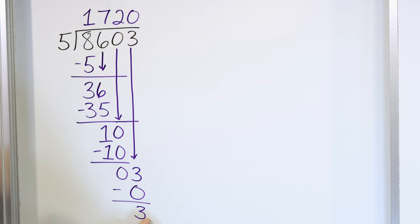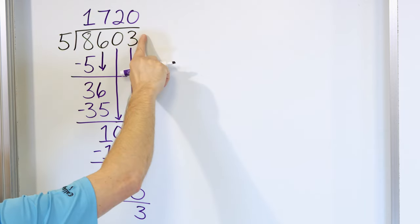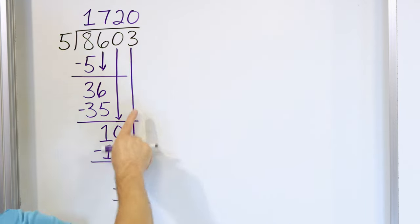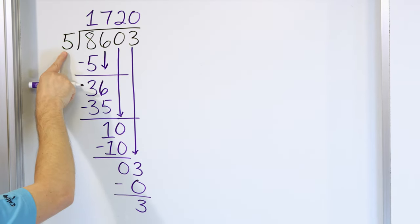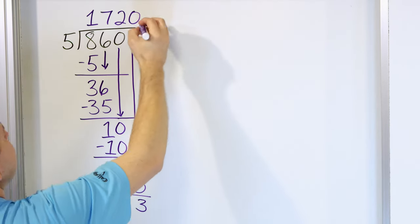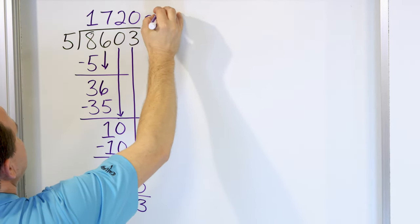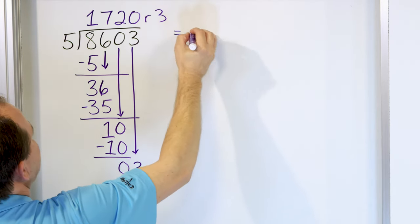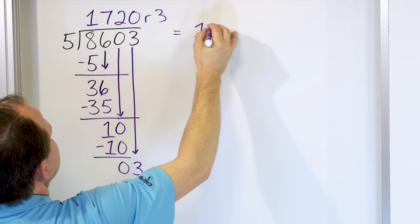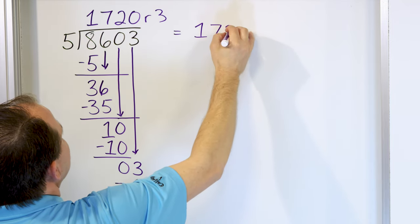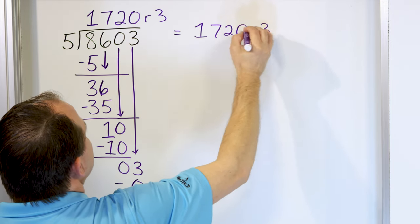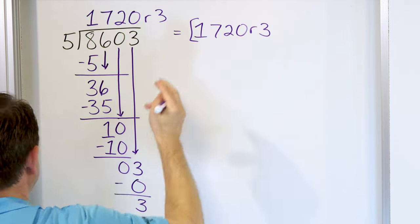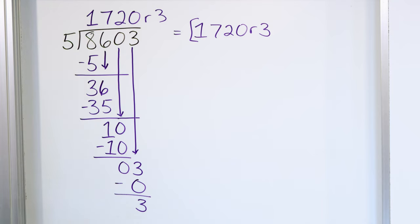After we subtract, there is no next digit, so this is our remainder. Double check — it's less than 5, and it is. So the remainder is 3. The answer is 1,720 with a remainder of 3.